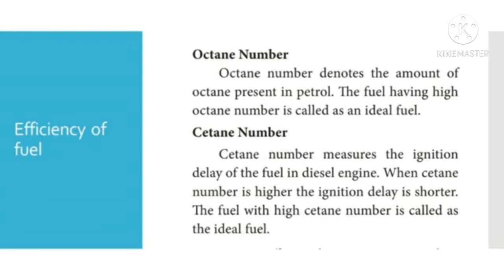Octane number denotes the amount of octane present in petrol. The fuel having a high octane number is called an ideal fuel. Cetane number measures the ignition delay of the fuel in a diesel engine. When the cetane number is higher, the ignition delay is shorter. The fuel with a high cetane number is called the ideal fuel.